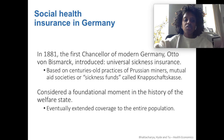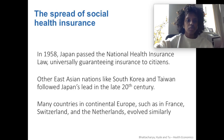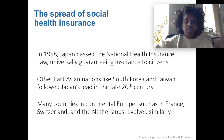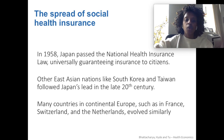This was considered a foundational moment in the history of the welfare state. Eventually, coverage extended to the entire population. Social insurance has spread since that time through many countries. In 1958, Japan passed their national health insurance law, universally guaranteeing insurance to Japanese citizens. Other countries like South Korea and Taiwan developed single payer systems as well, late into the 20th century.